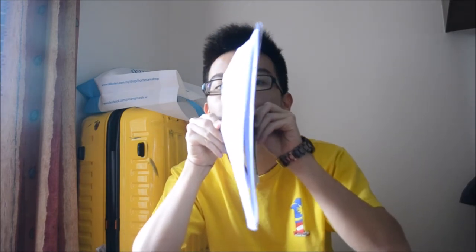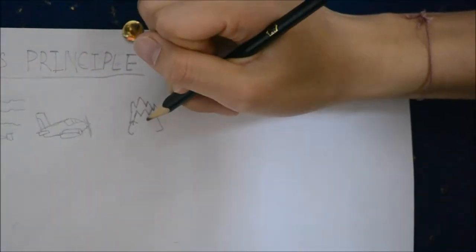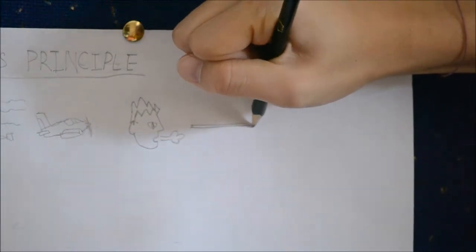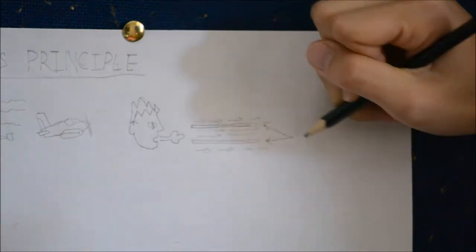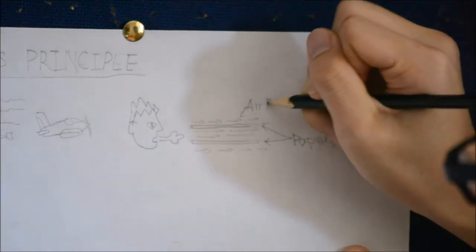Notice that the papers come together when air is being blown through the gap. This is because air particles in between the papers are moving faster than those on the opposite sides of the paper, creating a region of low pressure in the middle and high pressure outside.